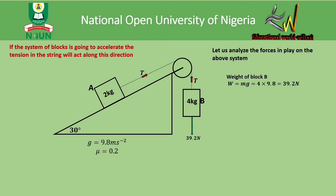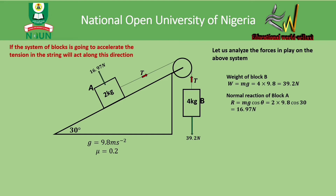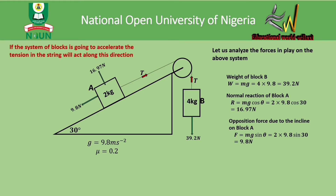The normal reaction on block A can be found using the formula mg cosθ. Substituting the values, the normal reaction on block A is 16.97 newtons. There is also an opposing force due to the incline on block A — the component mg sinθ — which tends to slide block A down the incline. Substituting values, this gives 9.8 newtons.